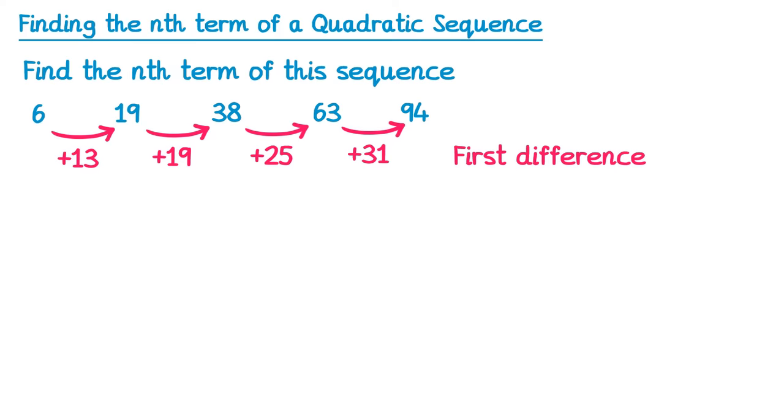Now when the sequence was linear, this first difference would be constant, that is, the same number each time. So we're always adding or taking away the same amount.